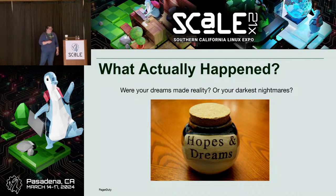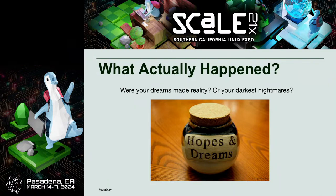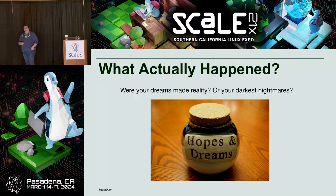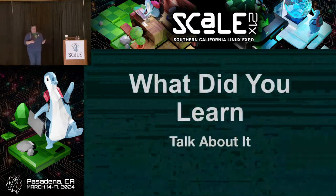Then we want to talk about what actually did happen — we know what we hoped was going to happen. Knowing exactly what happened is super important because then you know what to look for if it happens for real. And hopefully you can shore it up and fix it in the meantime.